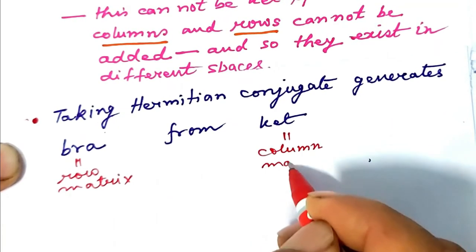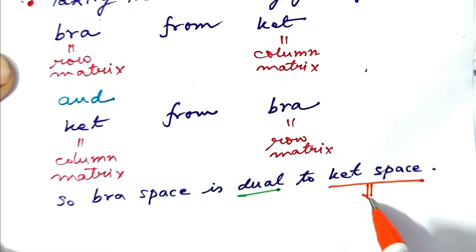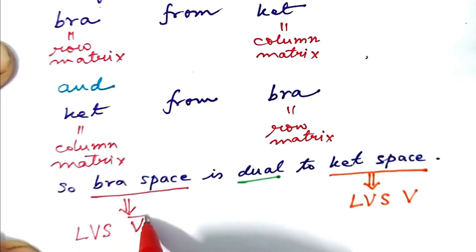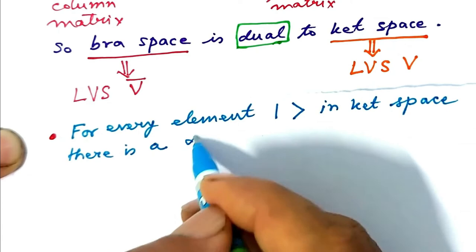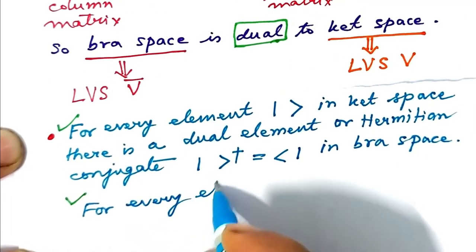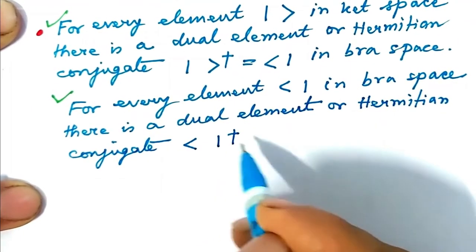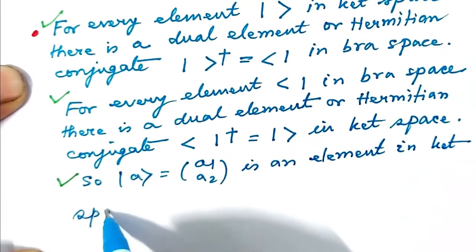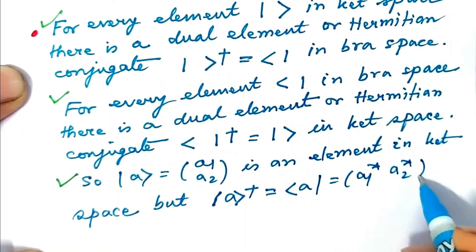Bra is a row matrix and ket is a column matrix. Taking the Hermitian conjugate generates a bra from a ket. Bra space is dual to ket space. If ket space is a linear vector space V, then bra space is another linear vector space dual to V, represented by V-bar. For every ket in ket space there is a dual element — the Hermitian conjugate — which is a bra in bra space. So ket-A = column (a1, a2) is in ket space, while ket-A dagger = bra-A = row (a1*, a2*) is in bra space.